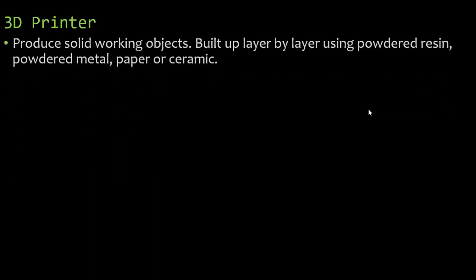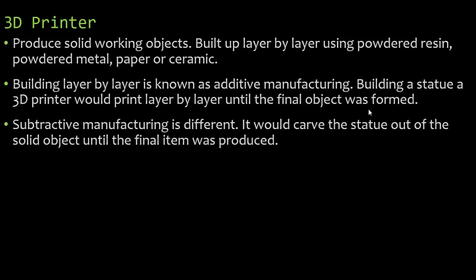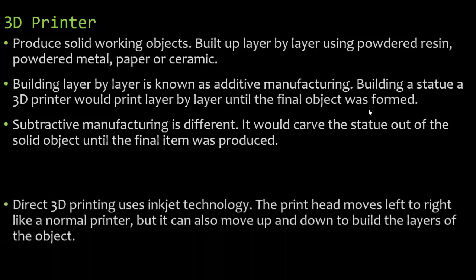Then we have 3D printers. They produce solid working objects, built up layer by layer using powdered resin, powdered metal, paper, or ceramic. We call this additive manufacturing — building layer by layer until the final object is formed. There's also subtractive manufacturing, which carves the object out of a solid material until the final item is produced. So additive adds layer by layer, while subtractive starts with the whole material and removes what isn't needed.